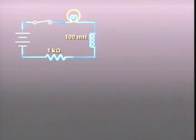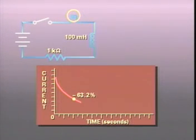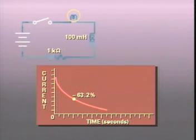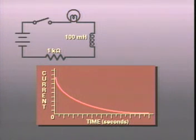The time constant works in reverse, also. When we open this inductive circuit, the amount of time for current to decrease 63.2% from its original value is 100 microseconds. After five time constants, the current decreases 99% from its maximum value and is effectively zero.